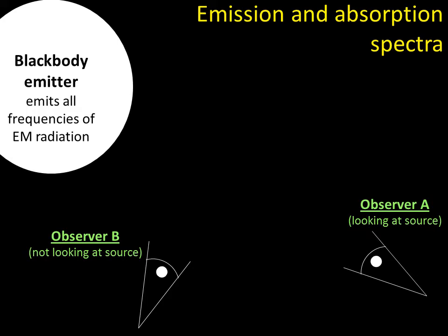but a blackbody emitter is just something that emits all frequencies of EM radiation. Stars are really good models of blackbody emitters, okay, so there are no gaps at all.